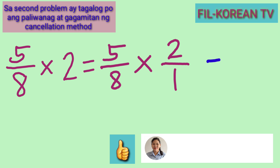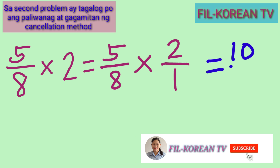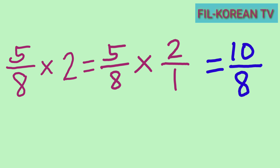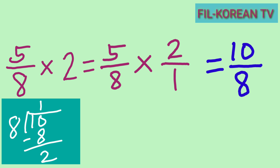Let's multiply: 5 times 2 equals 10, and 8 times 1 equals 8, so the answer is 10/8. It is an improper fraction — the numerator 10 is greater than the denominator 8 — so we need to simplify it by dividing the numerator by the denominator. 10 divided by 8: the answer is 1 with a remainder of 2.